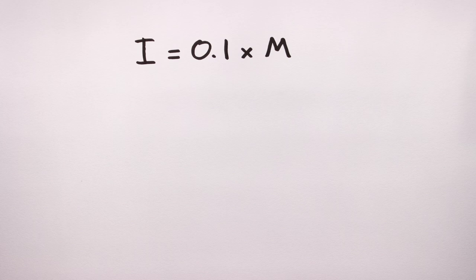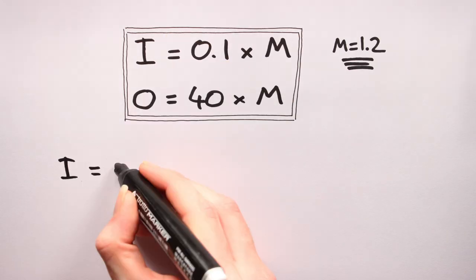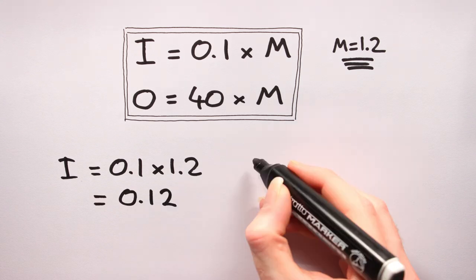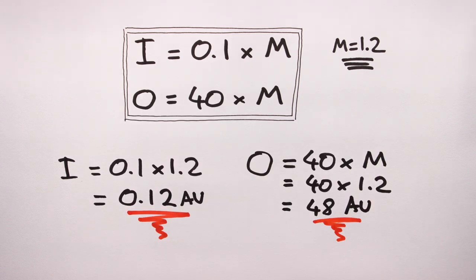And the outer limit is given by the equation O = 40 × m. So after a bit of intense number crunching, we find that the closest a planet can be to our star is 0.12 AU, and the furthest out it can be is 48 AU.